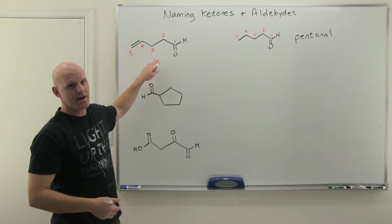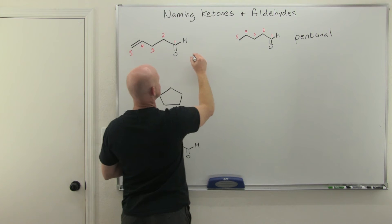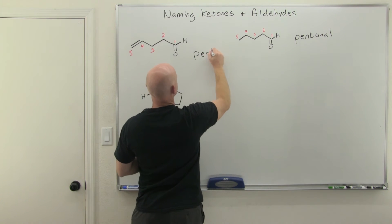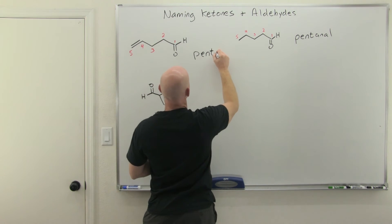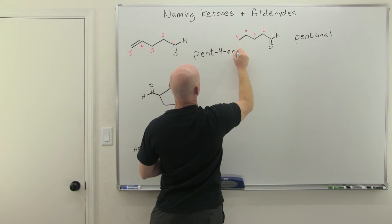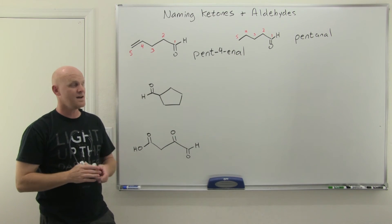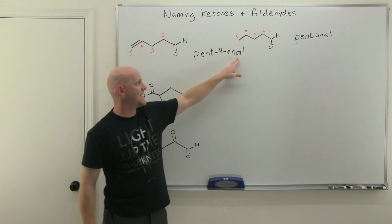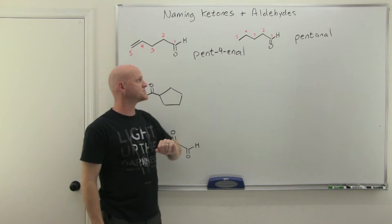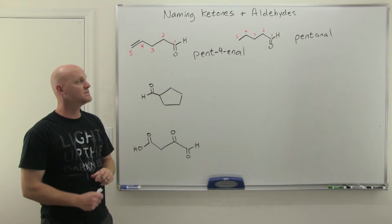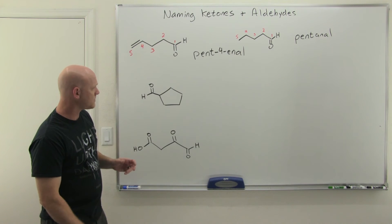Now with the alkene there, it's going to be a little bit different. Instead of pentane, it's going to be pentene, but we got to give the location of that -ene. So in this case, it's between four and five. So it gets the lower number. So pent-4-ene. Oh, and the aldehyde again has to be at position one. So it's not part of the name for aldehydes when you're naming it with the AL suffix as the highest priority functional group. So in this case, that's it. Pent-4-enal.